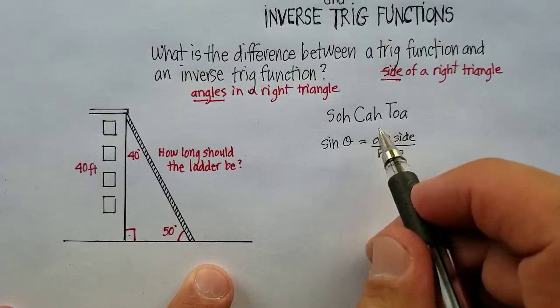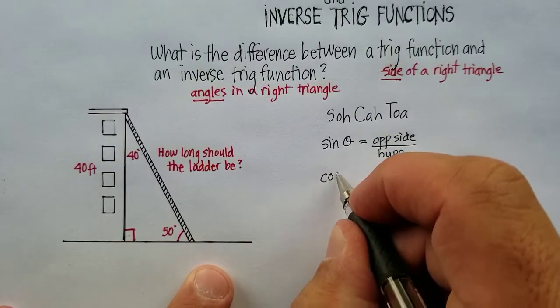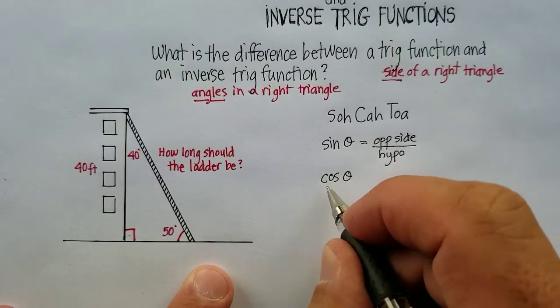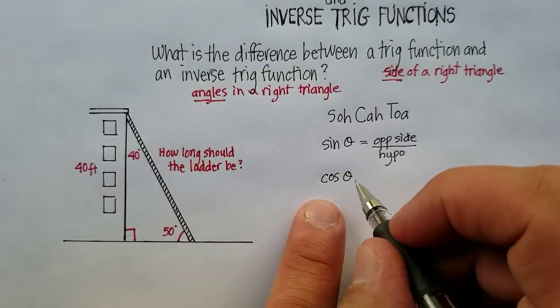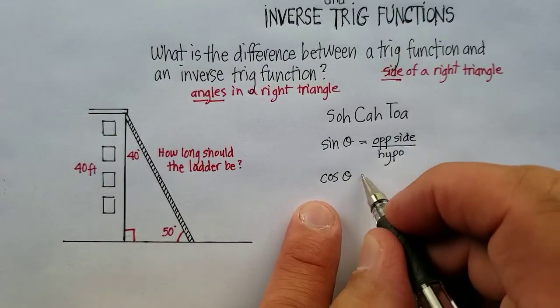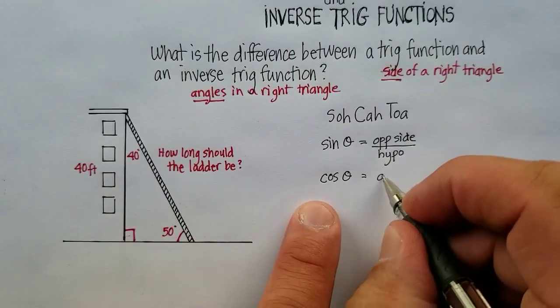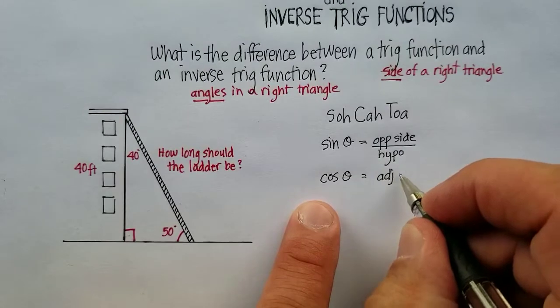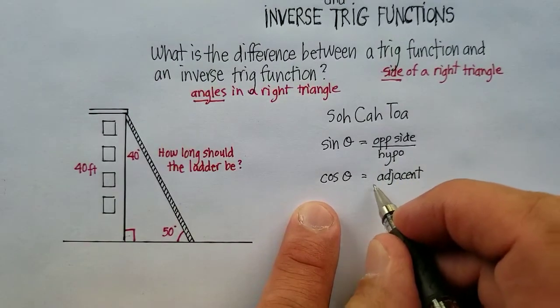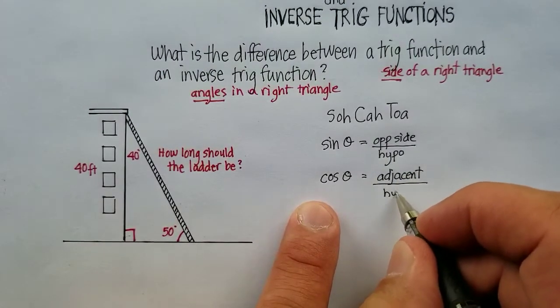Cosine, or COH, we would say cosine, not cos, but cosine theta, which again represents angle, is equal to the adjacent side over the hypotenuse. So let's just write that in here. The adjacent side, which means next to, over the hypotenuse.